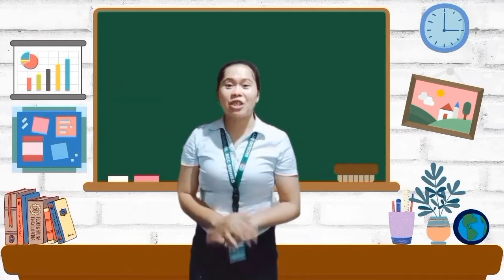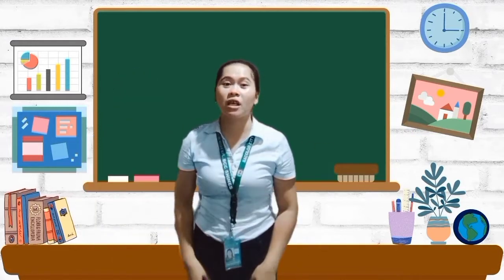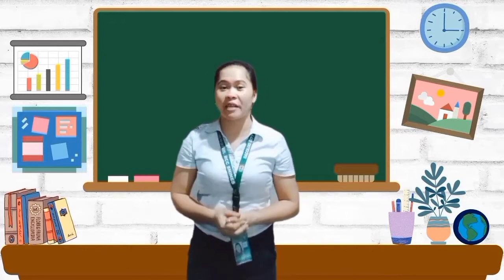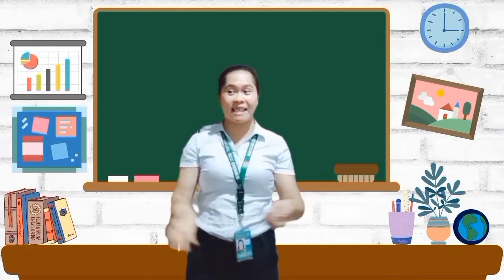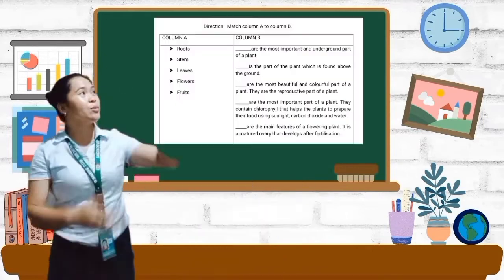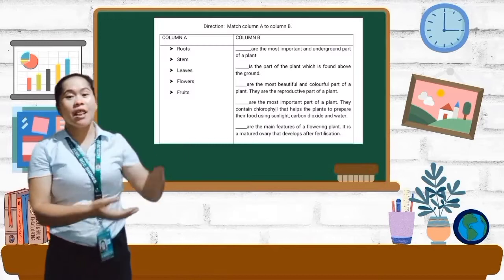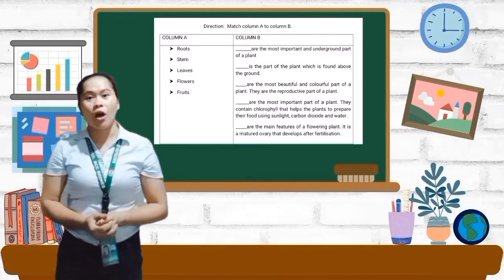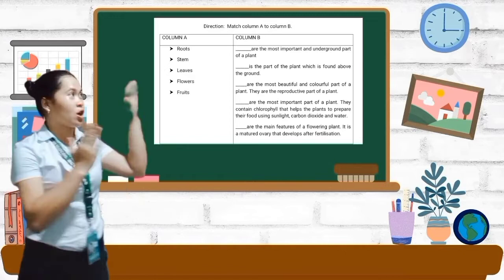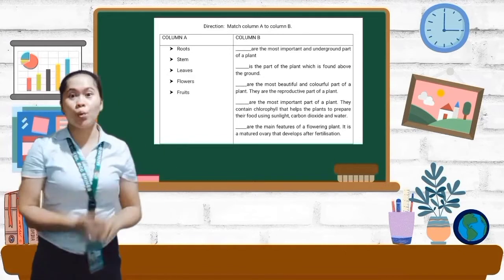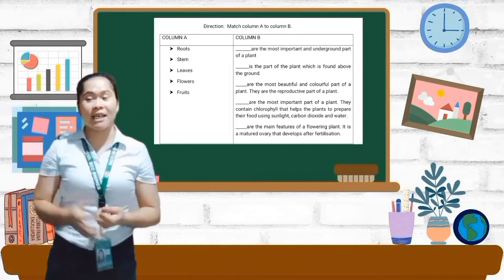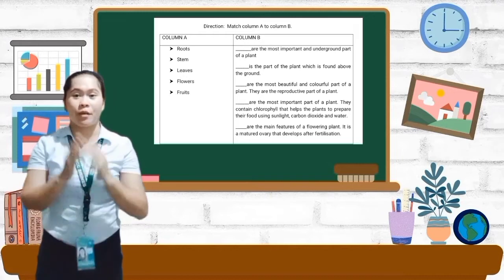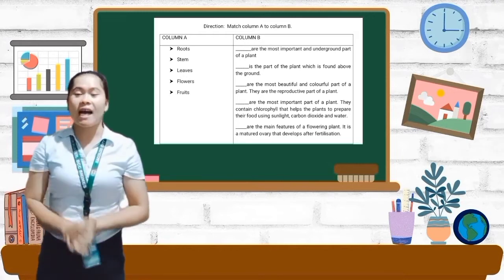So this time, children, Ma'am Joy will give you an exercise. But don't be afraid because it is not recorded. So as we can see, there is a column A and column B. All we need to do is match column A to column B. But children, read the question first before we answer.